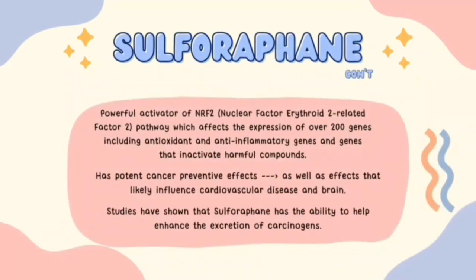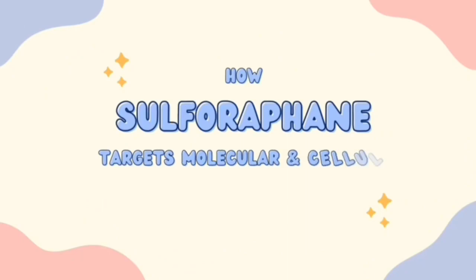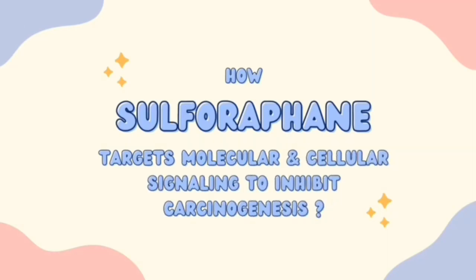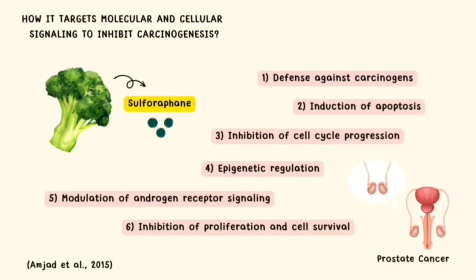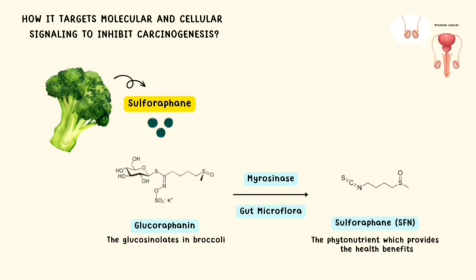So how does sulforaphane target molecular and cellular signaling to inhibit carcinogenesis? Here are the potential cellular mechanisms pertinent to chemoprevention in prostate cancer. It is to be noted that all these mechanisms have some degree of interaction to synergistically afford chemoprevention. Firstly, glucoraphanin in broccoli is converted to sulforaphane, SFN, by the myrosinase enzyme through chewing, freezing, or gut bacteria.